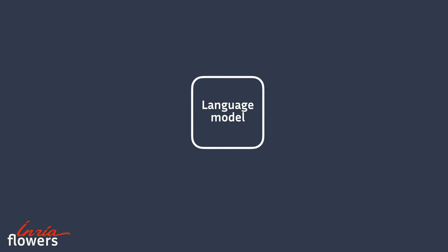A language model is a program capable of doing one particular thing: given a context of words, predict the word that is most likely to appear after this context. We call this the next word prediction task.